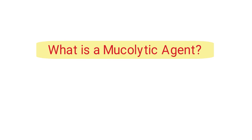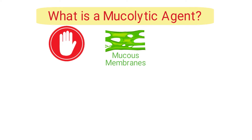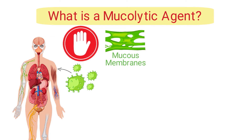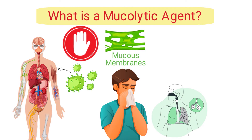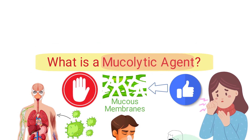What exactly is a mucolytic agent? Mucus is a sticky, viscous substance that is produced by the mucous membranes. It serves an important role by trapping foreign particles and bacteria, which prevents them from entering the body. However, mucus can also build up and cause problems, especially in people with respiratory conditions, which is when mucolytic agents are indicated, as they work to dissolve mucus and make it easier to expectorate.